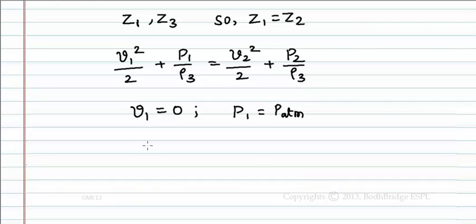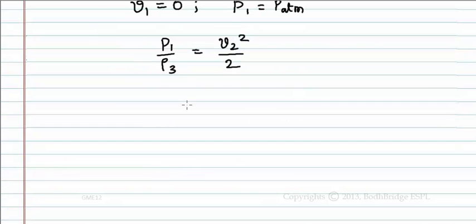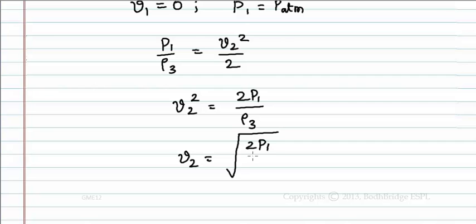So finally the equation becomes p1 by rho3 equals v2 squared by 2. So v2 squared equals 2p1 by rho3. Therefore v2 equals root of 2p1 by rho3.